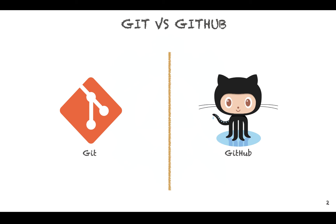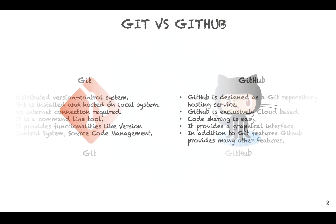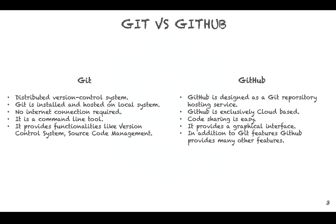Git and GitHub are two entirely different concepts in the market. Git is a version control system — specifically, a distributed version control system — which means in Git, changes are not directly pushed to the server. Instead, it is first committed to the local repository and from there it is pushed to the central server.